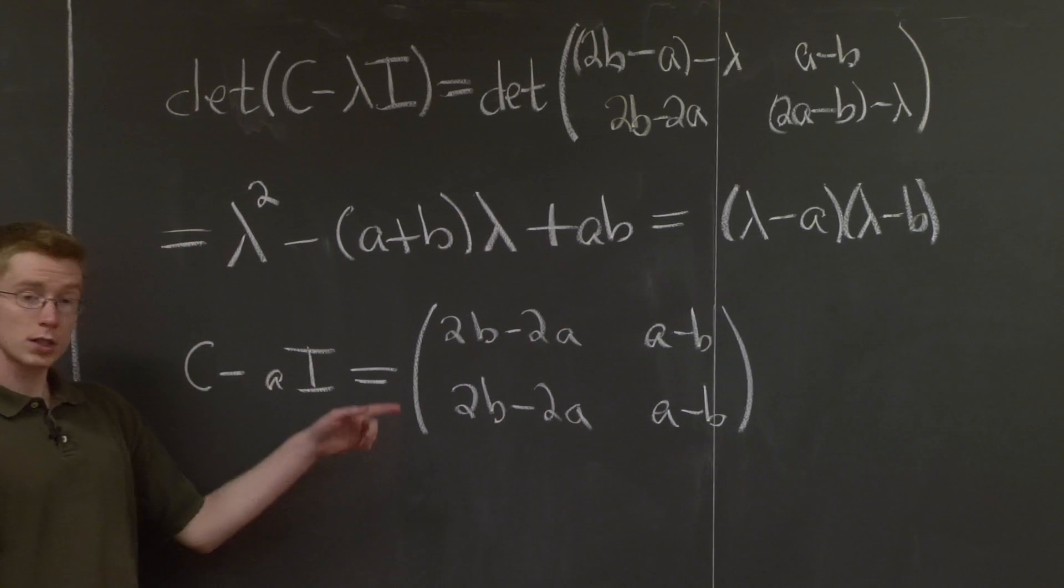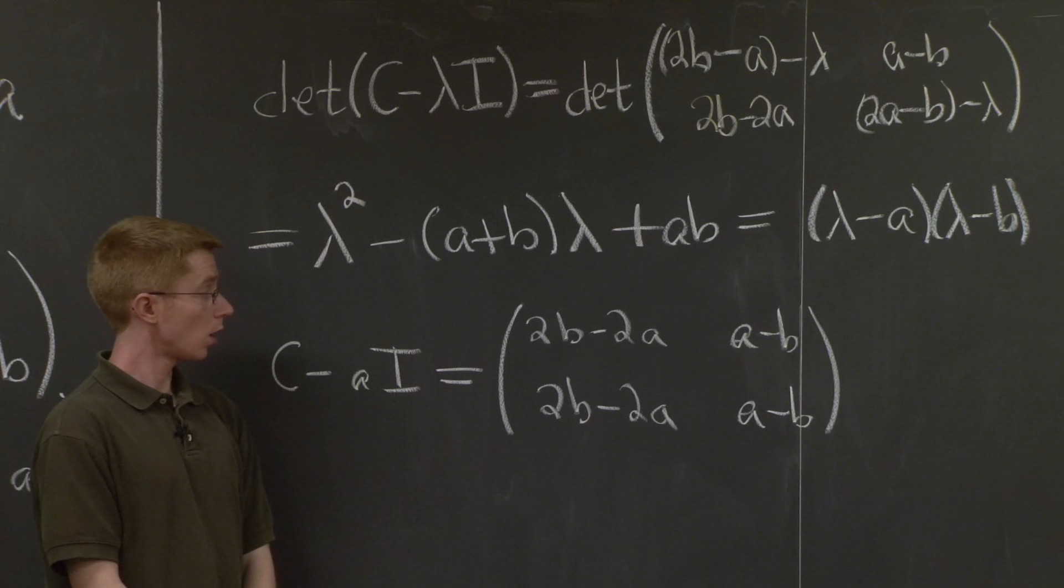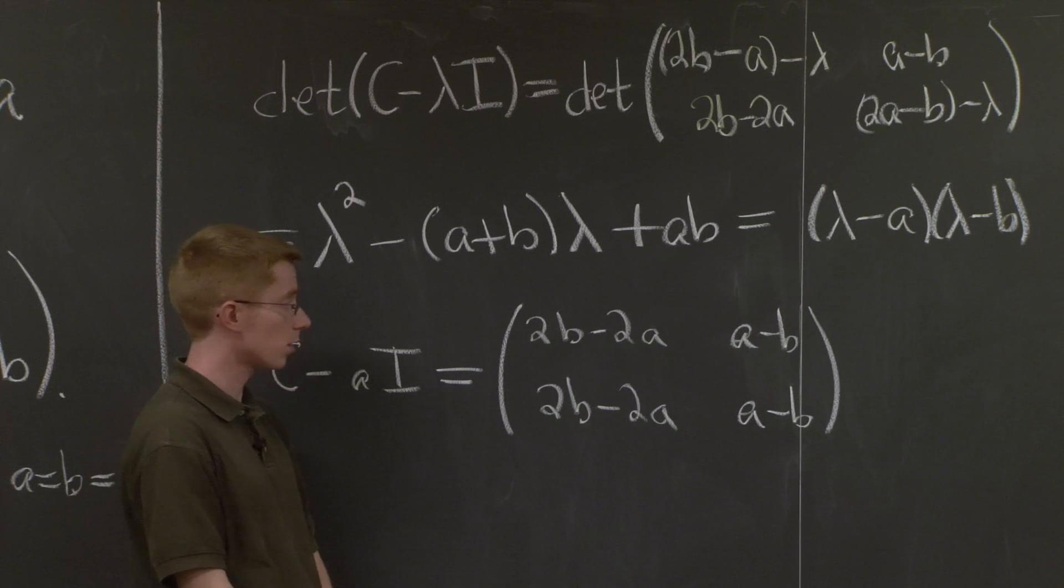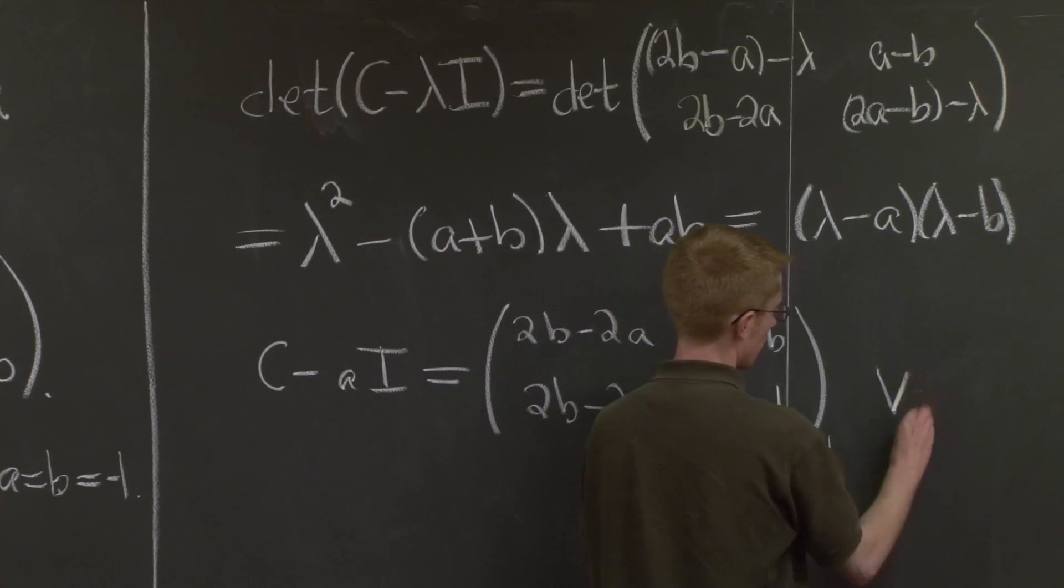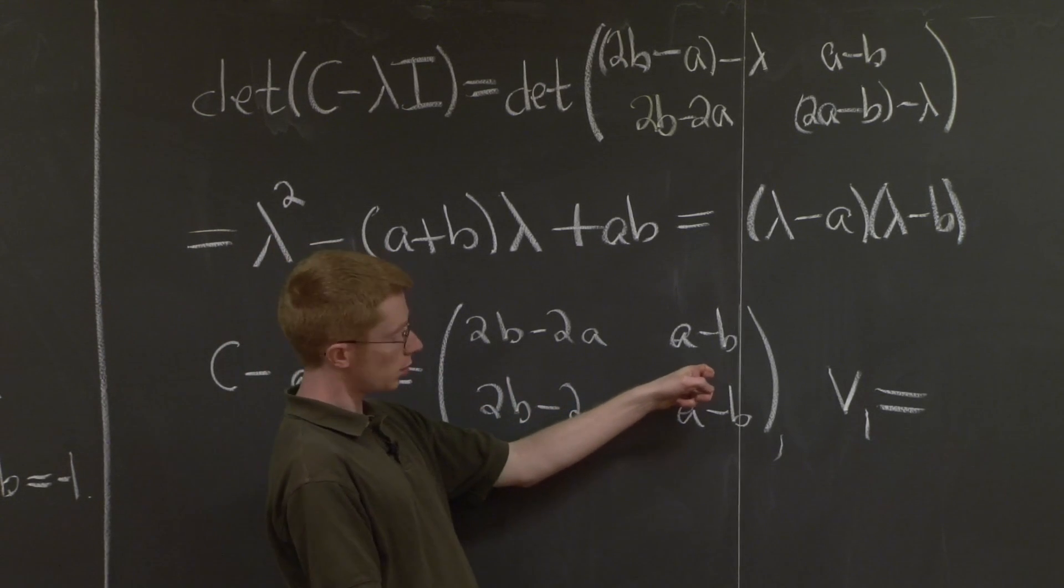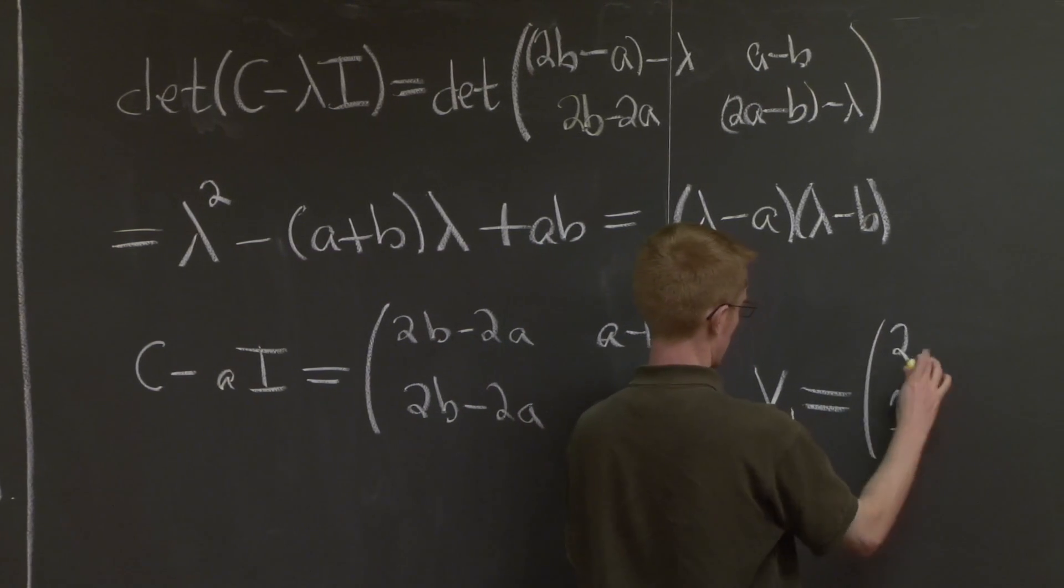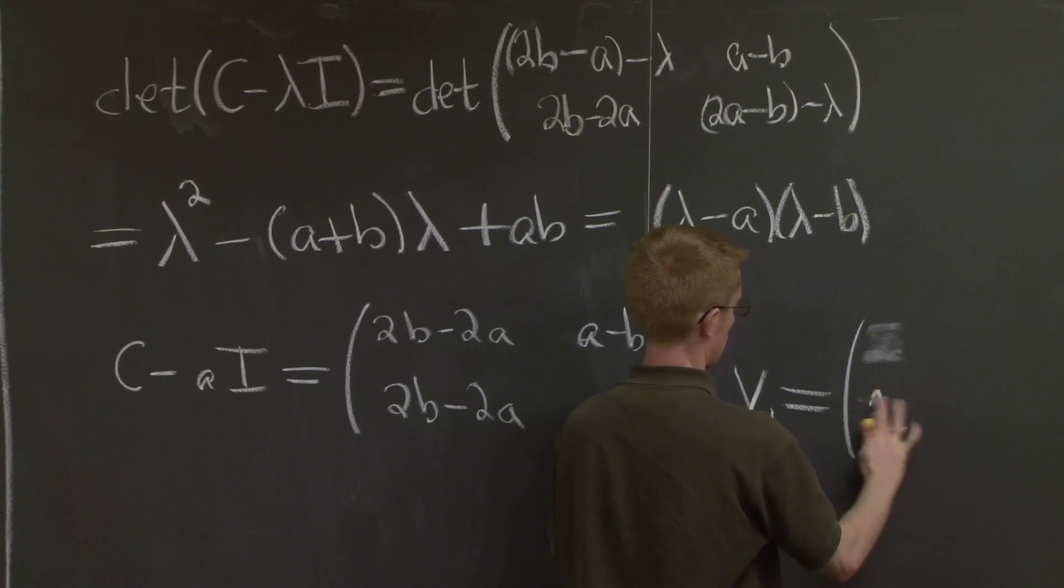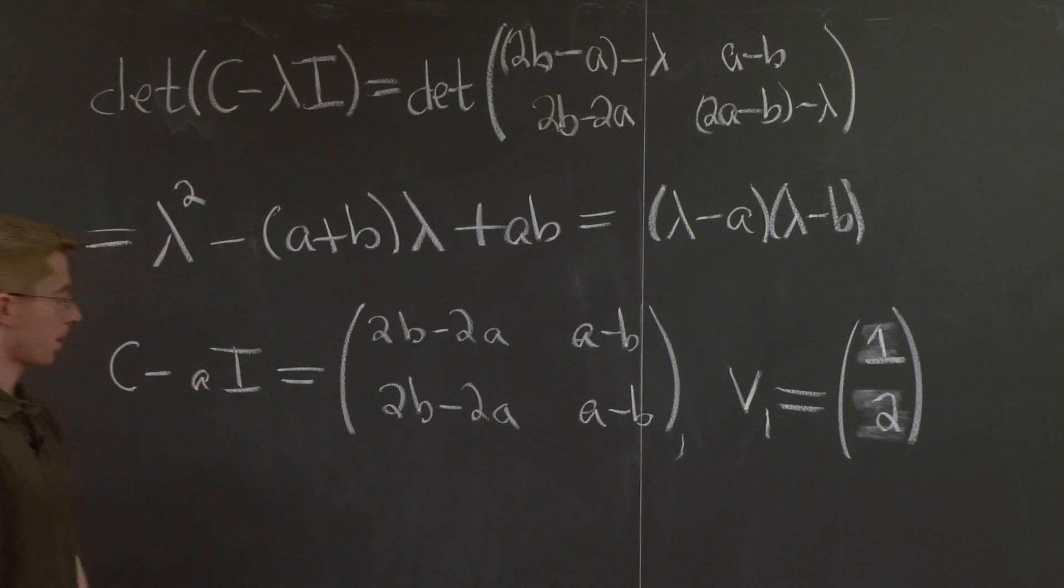Good. So you can see that this matrix has the same columns and the same rows, and so you can see that a vector in the null space, since this column is negative 2 times this column, we can see that our first eigenvector is just 1, 2. Good.